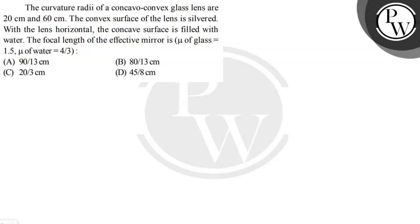Hello, so the question is the curvature radii of a concave convex glass lens are 20 centimeter and 60 centimeter. The convex surface of the lens is silvered with the lens horizontal, the concave surface is filled with water.